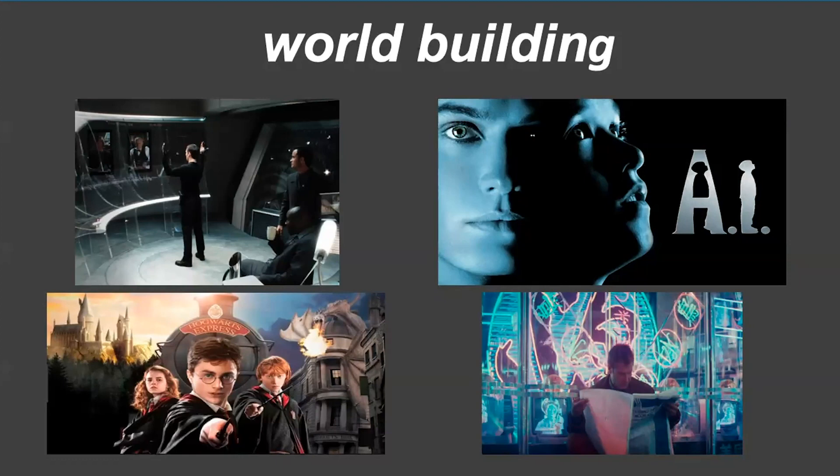Films like Minority Report, AI, or Blade Runner — and fantasy like Harry Potter — are good examples of stories embedded in rich, fully conceived worlds different from ours in distinctive ways. The exploration of that world is as interesting and important as the story itself. World building can be highly deliberate: to prepare to film Minority Report, Steven Spielberg convened a day-long ideas summit with futurists, scientists, writers, and designers to help imagine what the world would look like with new technology and capabilities — including the ability to foresee and prevent crimes before they happen.